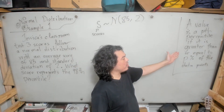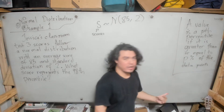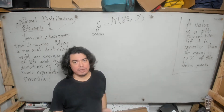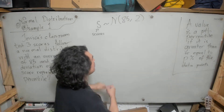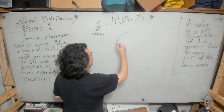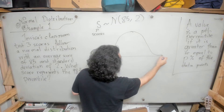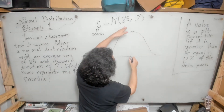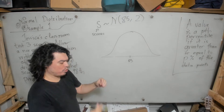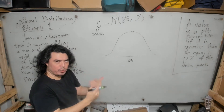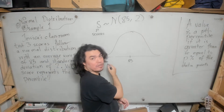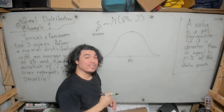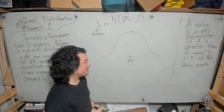A value is the pth percentile if it is greater than or equal to p percent of the data points. So in our case, a value will be the 98th percentile if it is greater than or equal to 98 percent of the data points. Let's draw the normal distribution — it's always important to draw it to understand what's happening. The mean is 85, so 85 sits right at the center, and the 98th percentile will be some value further to the right.